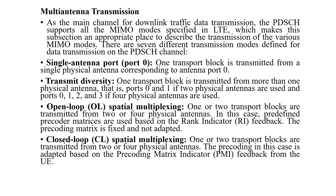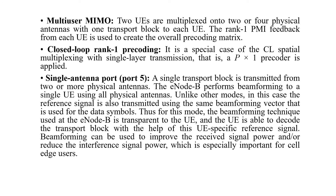Open loop spatial multiplexing: one or two transport blocks are transmitted from two or four physical antennas. Multi-user MIMO: two user equipments are multiplexed on two or four physical antennas with one transport block to each user equipment. The rank-1 PMI feedback from each UE is used to create the overall precoding matrix.